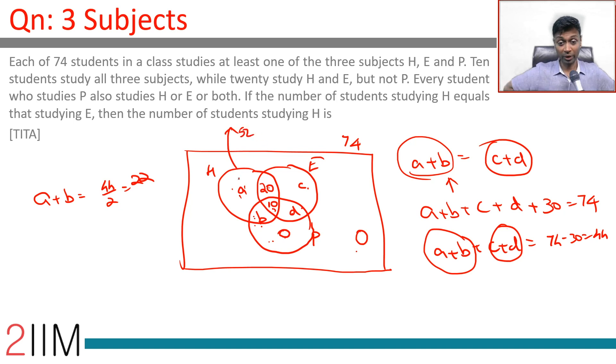In this question we can even eliminate P in the last step. Let's say H and E have a total of 74. H union E is 74. H intersection E is 30. H equal to E. And then simplify and solve that.